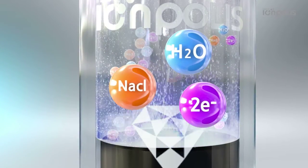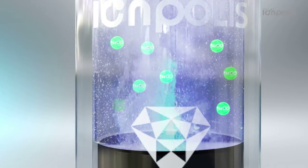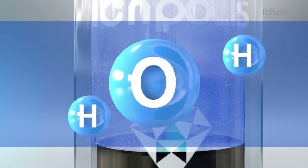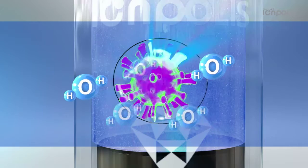Ionpolis S electrolyzes water to generate hydroxyl ion. Hydroxyl ion combines with hydrogen cation that is a component of cell membranes in bacteria. It destroys cell membranes to kill bacteria and it returns to water again.